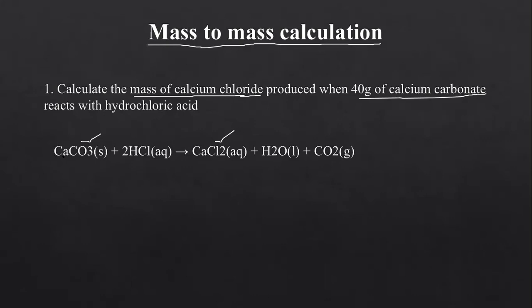Checking the equation is balanced: one calcium on each side, one carbon on each side, three oxygens on the left and 2 plus 1 = 3 on the right, two hydrogens on each side, two chlorines on each side. The equation is balanced. Now we write the molar mass of CaCO3 with coefficient 1 equals the molar mass of CaCl2 with coefficient 1.